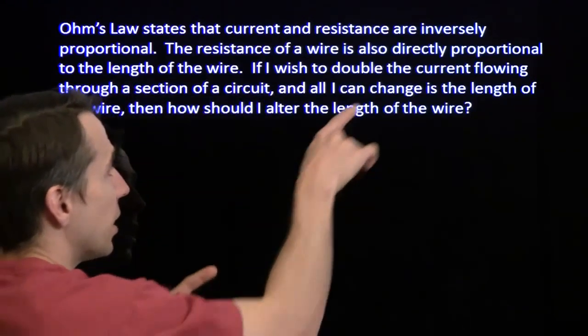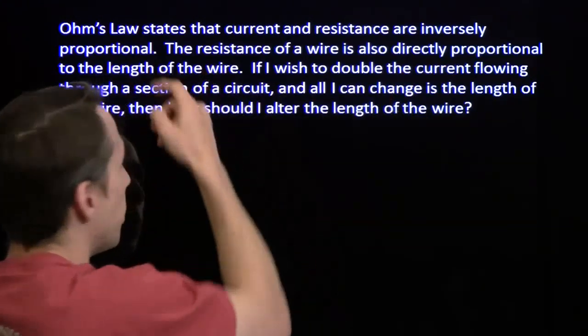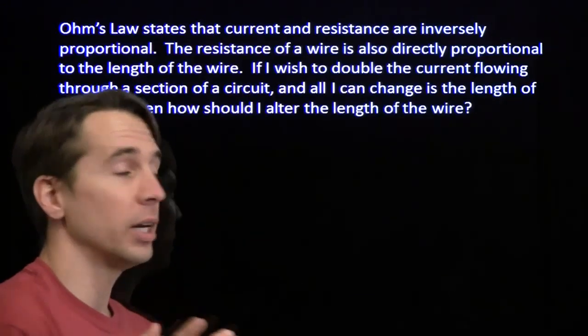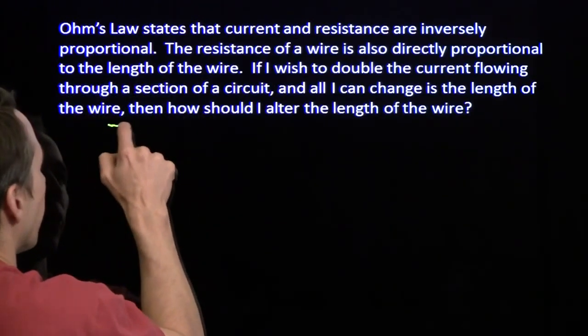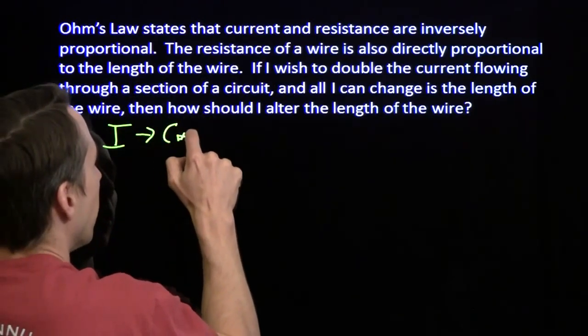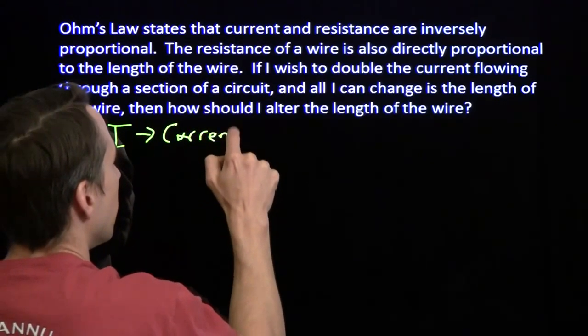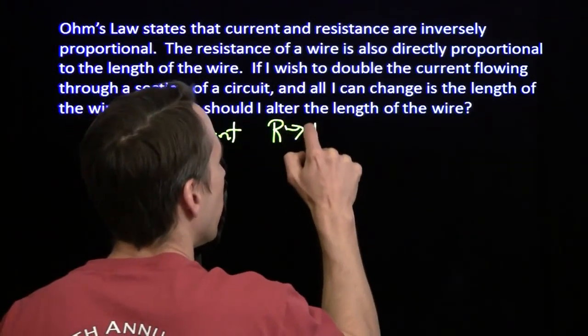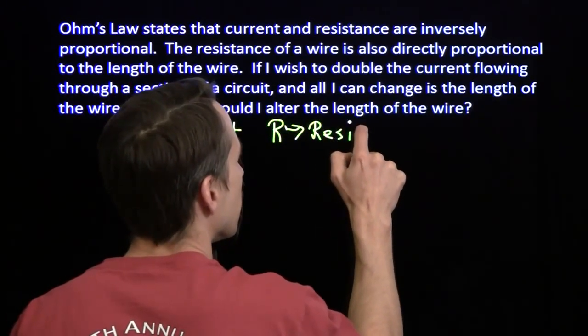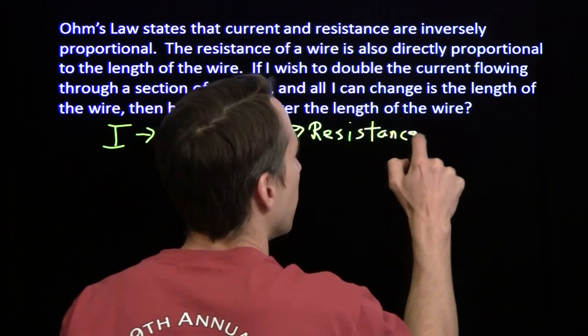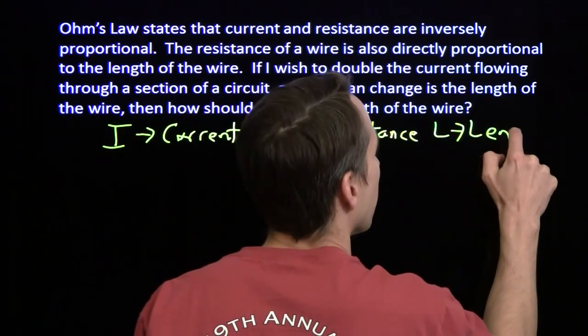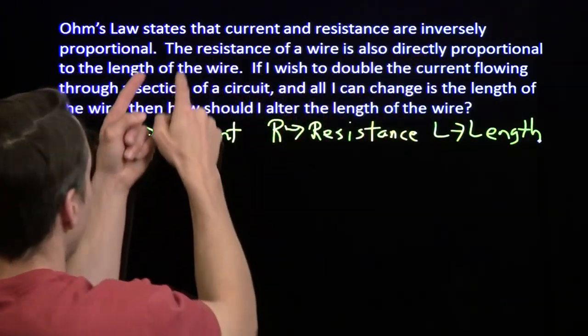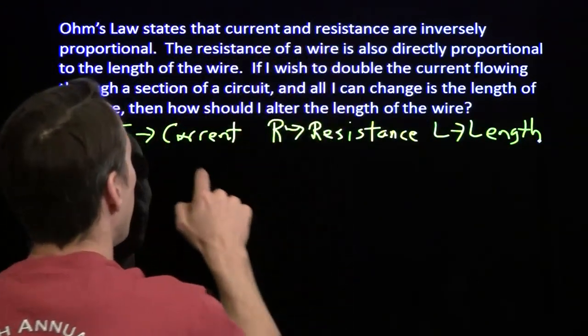Let's see if we can take our definition of direct proportionality and inverse proportionality and prove that the length and the current are inversely proportional. We're going to need some variables. We'll start with I for current. When you get to an electrical engineering class, you'll figure out why we use I for that. R is resistance, and L will be our length.